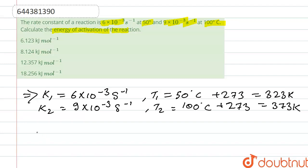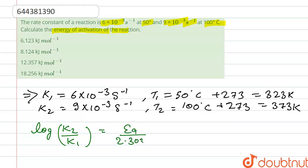Substituting these values in the Arrhenius equation: log(k2/k1) is equal to Ea upon 2.303R, multiplied by (T2 minus T1) upon (T1 times T2). This is the equation we will use.